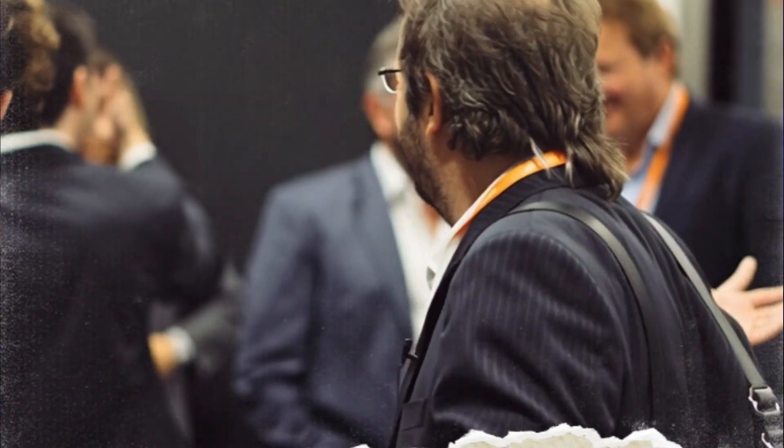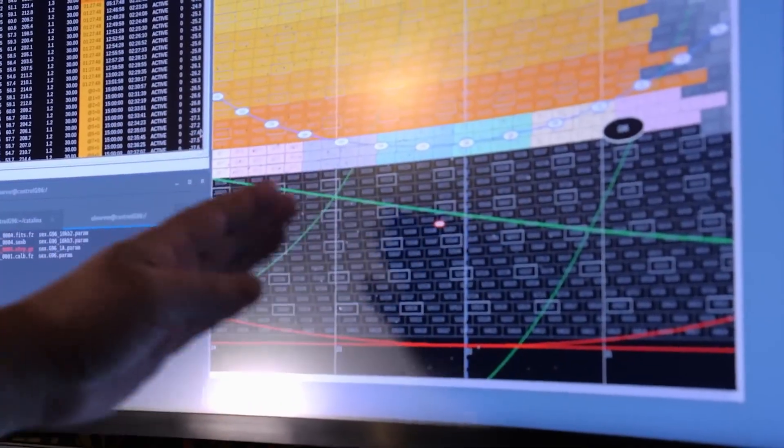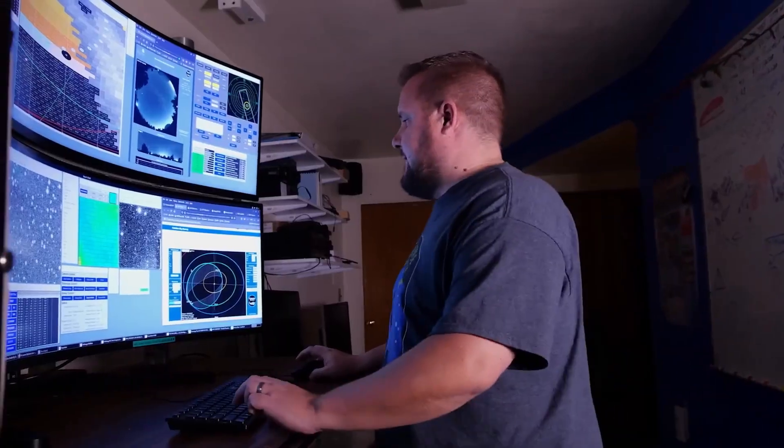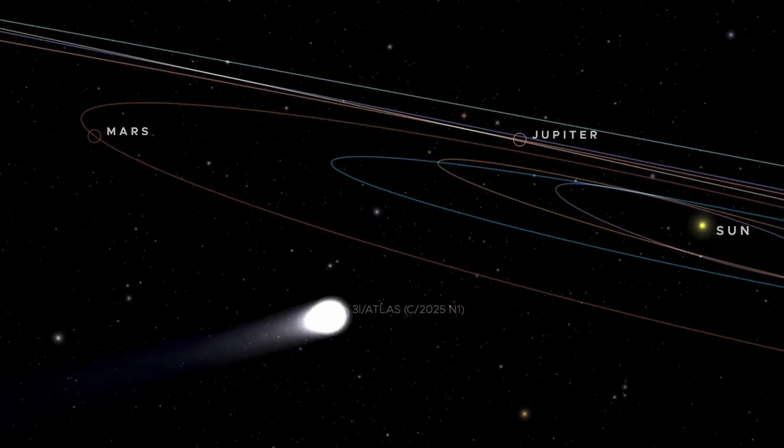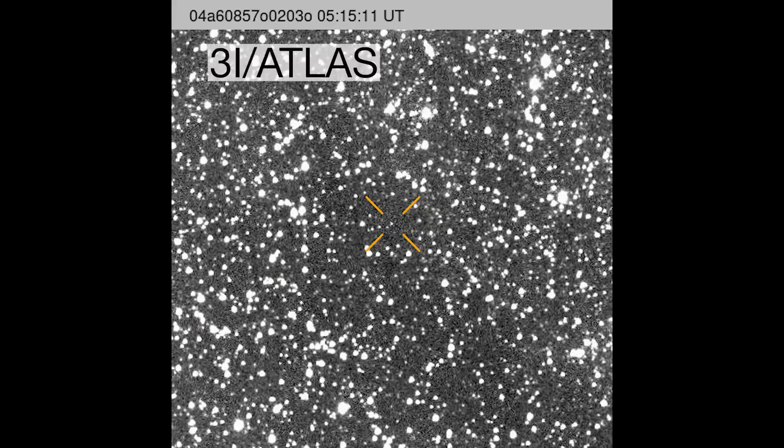Gianluca Massi, an astronomer and founder of the Virtual Telescope Project, has been tracking 3I Atlas for months. On the night of November 10th into the 11th, he aimed his robotic telescopes toward the eastern horizon from Manchano, Italy.